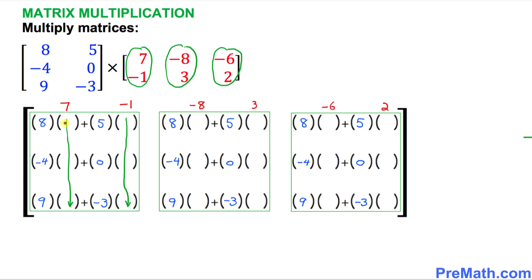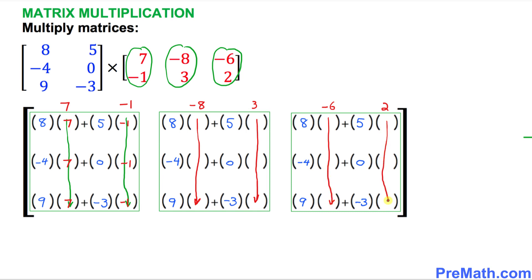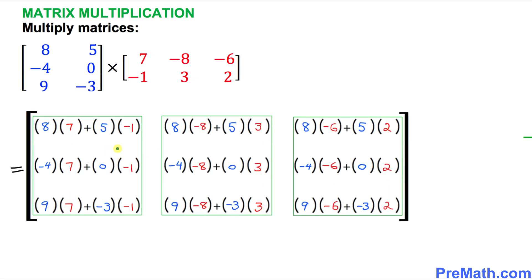Let me show you how this works: 7 gets filtered in across the board — 7, 7, 7. Negative 1 goes across as negative 1, negative 1, negative 1. Likewise, negative 8 shows up all the way across, 3 shows up across its row, negative 6 is placed across, and 2 is placed across as well. Here is the final product of our answer matrix after filling in all these blue and red numbers.